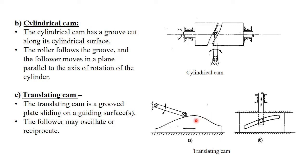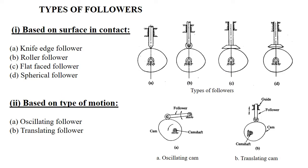The translating cam is also used in industry to get desired motion — when we need to convert a reciprocating or translatory motion into either oscillatory or reciprocating motion. So we have seen three types of cams: disc type, cylindrical type, and translating type. Now let us go through the classification of followers.